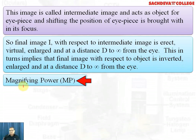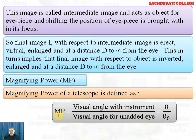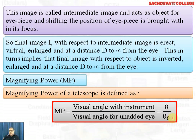Now we come to the magnifying power of the telescope. Magnifying power is defined using the same type of definition: theta is the visual angle with the instrument (with the telescope), and theta-naught is the visual angle without the telescope, that is, for the unaided eye. Magnifying power is the ratio theta divided by theta-naught.